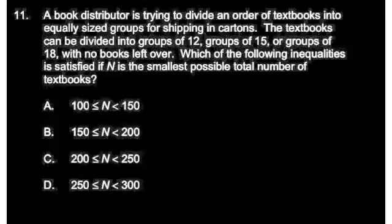A book distributor is trying to divide an order of textbooks into equal size groups for shipping into cartons. The textbooks can be divided into groups of 12, groups of 15, or groups of 18 with no books left over. Which of the following inequalities is satisfied if n is the smallest possible total number of textbooks?